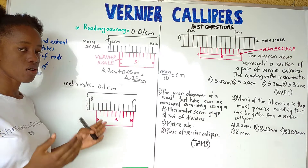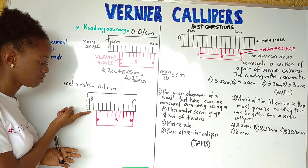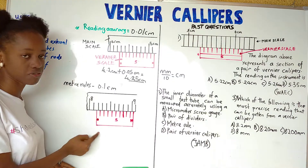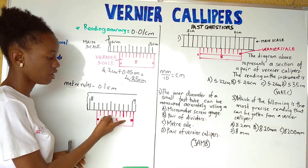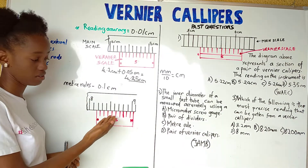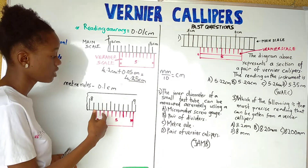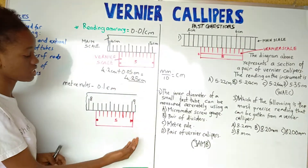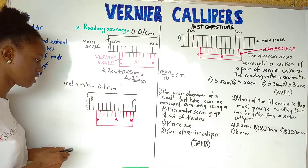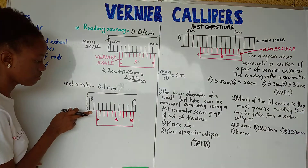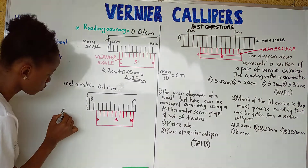Let's see another example. As I said before, first you look for the value on the main scale just before the vernier scale starts. After that, you add the value you get from the vernier scale. You find a line that meets with a line on the main scale, multiply by the reading accuracy, and add it to the main scale value to get your final answer. So let's do that right now. The value on the main scale just before the vernier scale starts is 8.1 centimeters.